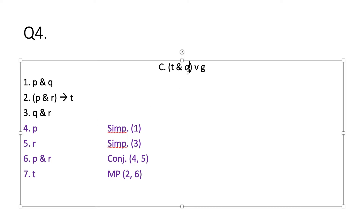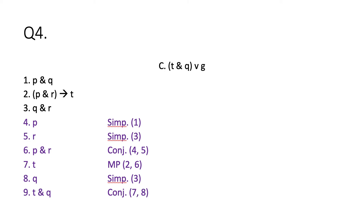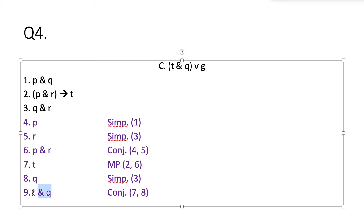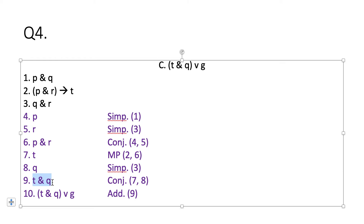Now all I need to do is get Q. That's not hard because I have Q in my third premise, so I do simplification on line three to get Q. I put T and Q together using conjunction, and now I'm one step away from my conclusion. I use the rule of addition on line nine because if T and Q is true, then T and Q or G is necessarily true as well — so addition on line nine gives me my conclusion.